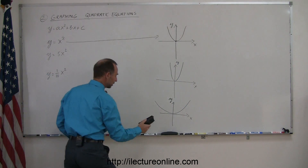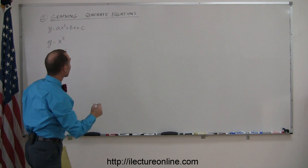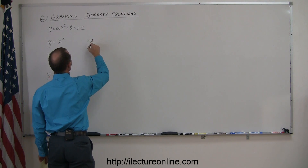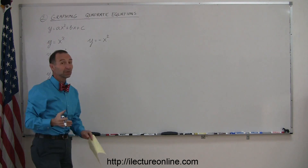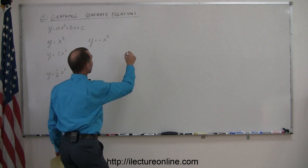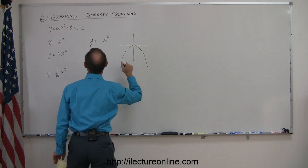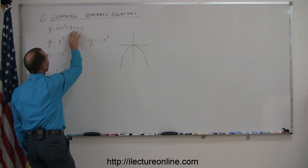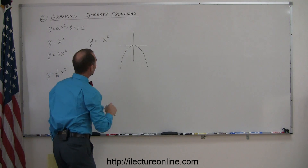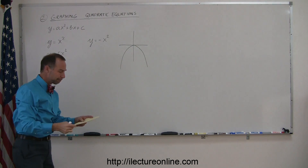What would it look like if you were to graph y equals minus x squared? That would simply turn the parabola around — flip it upside down. Since there's no b and no c, just a simple ax squared term where a is negative one, the parabola would open downward.